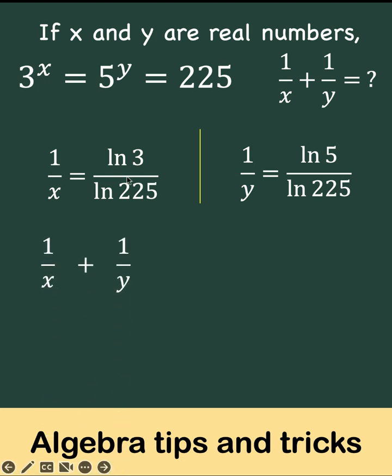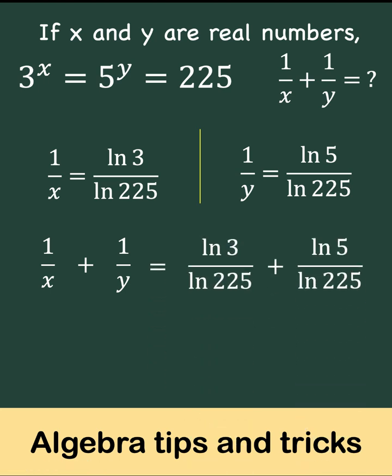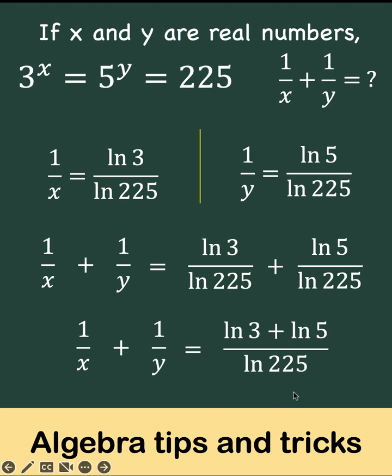And we add also their corresponding right members. We have ln of 3 over ln of 225 plus ln of 5 over ln of 225. Now we have a common denominator of ln of 225, so this becomes ln of 3 plus ln of 5 over ln of 225.